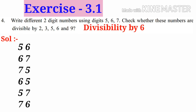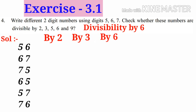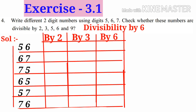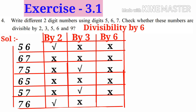Now, divisibility by 6. For a number to be divisible by 6, it must be divisible by both 2 and 3. Let us take a table. The first number and last number have 6 in their unit's place, so they are only divisible by 2. The remaining numbers are not divisible by 2. The third number and fifth number have a digit sum of 12, so they are only divisible by 3. The remaining numbers are not divisible by 3. So there is no number divisible by both 2 and 3, meaning no number is divisible by 6.